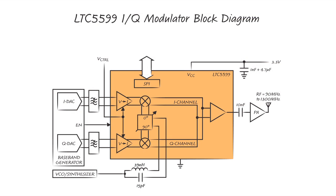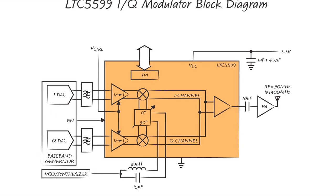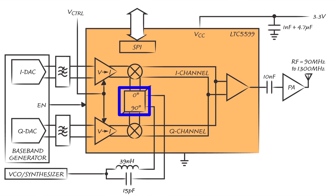The LTC5599 modulator comprises an on-chip polyphase filter, which generates precise quadrature phase shift for driving the LO inputs of the I and Q mixers. Their outputs are then summed to form the composite RF output signal that is sideband and carrier suppressed.